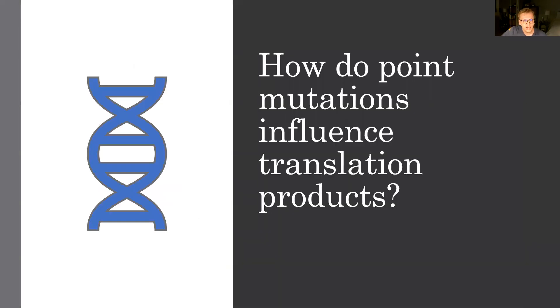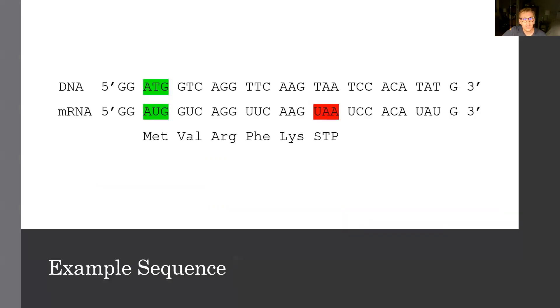So really the driving question behind these point mutations is how does it influence translation products? And this can manifest in a number of ways, and we're going to do this through an example. So looking at this example sequence, we're going to look along the DNA coding strand, which is listed here from the 5 prime to 3 prime direction, and we're going to look for this ATG. This is the beginning of our reading frame, and this codes for methionine. This is our start codon,